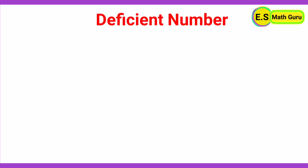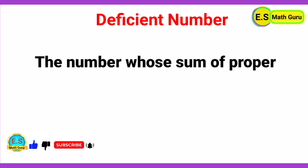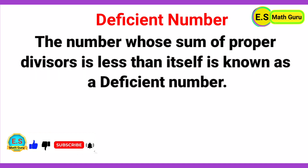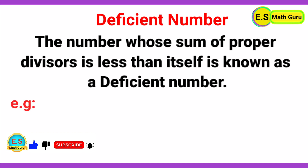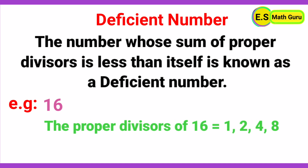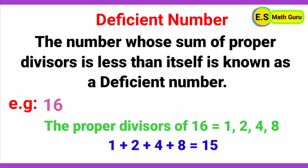Next, deficient number. The number whose sum of proper divisors is less than itself is known as a deficient number. For example, 16: the proper divisors of 16 are 1, 2, 4, and 8. The sum of these divisors equals 1 + 2 + 4 + 8 = 15. Here, the sum of the proper divisors 15 is less than the given number 16. Therefore, 16 is a deficient number.